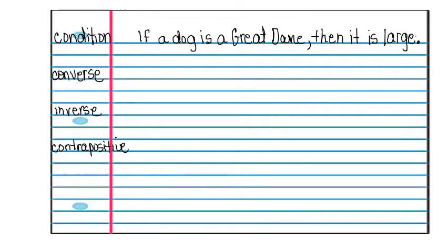Let's start with the conditional. If a dog's a Great Dane then it is large. So what you need to do is identify basically what the hypothesis is. And that's the if part. And then identify what the conclusion is. So that's going to be our condition. If a dog's a Great Dane then it is large. If P then Q.